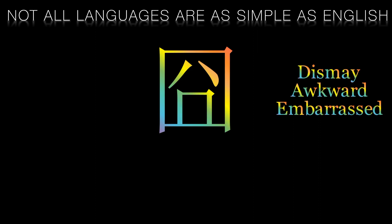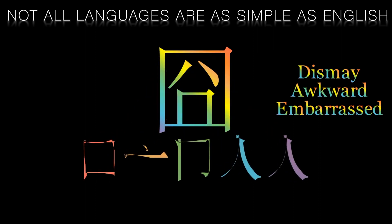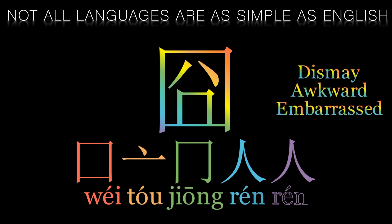This character is made up of several components, including a square shape that represents a window or opening and two smaller shapes that represent legs or feet. With unigram tokenization, we can break this character down into its individual components, allowing us to analyze its structure in more detail. For example, we might represent this character as Wei Tu Chong Ren Ren, where each character represents one of the component parts of the original character.